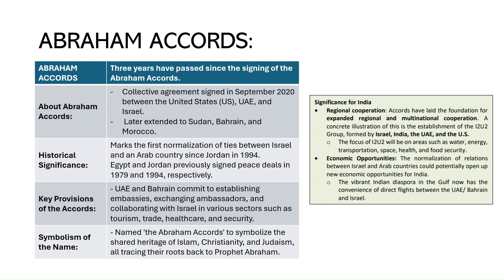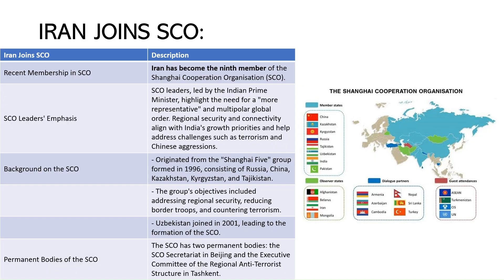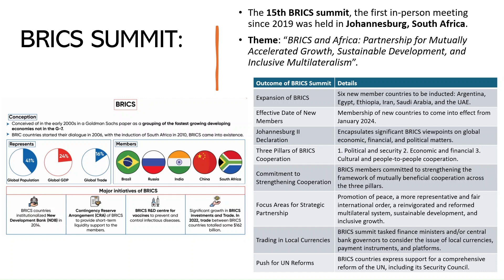Iran has become the ninth permanent member of the Shanghai Cooperation Organisation. The 15th BRICS Summit was the first in-person meeting after 2019, held in Johannesburg, South Africa, with the theme 'BRICS and Africa: Partnership for Mutually Accelerated Growth, Sustainable Development and Inclusive Multilateralism.' Six new member countries — Argentina, Egypt, Ethiopia, Iran, Saudi Arabia, and UAE — will be inducted effective January 2024.